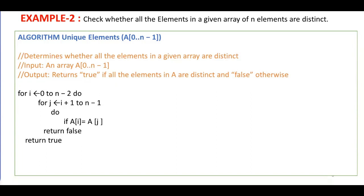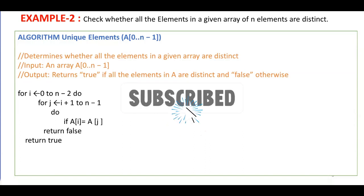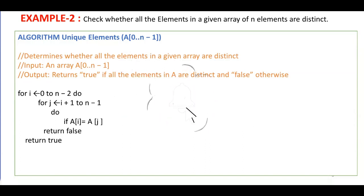If i is 0, then j starts from 1; if i is 1, then j starts from 2, and so on up to n-1. We check if a[i] and a[j] are the same. If they are the same, we return false. If no match is found till the end, then the algorithm returns true.